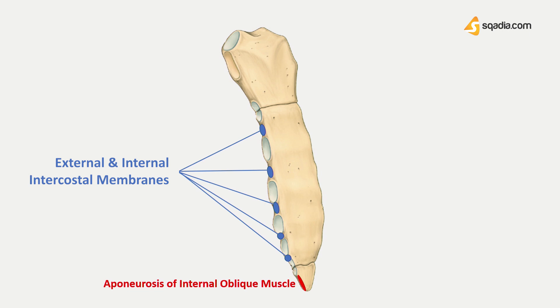The suprasternal notch gives attachment to the lower fibers of the interclavicular ligament and to the two subdivisions of the investing layer of the cervical fascia. The clavicular notch gives attachment to the capsular ligaments of the sternoclavicular joint.